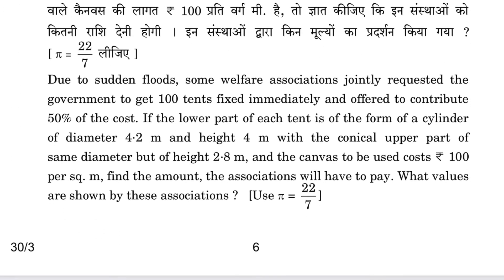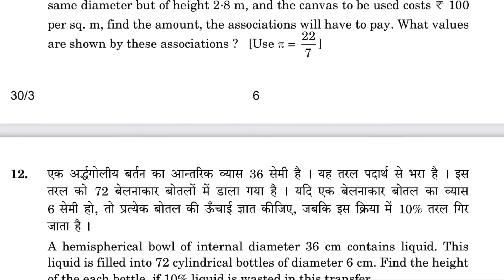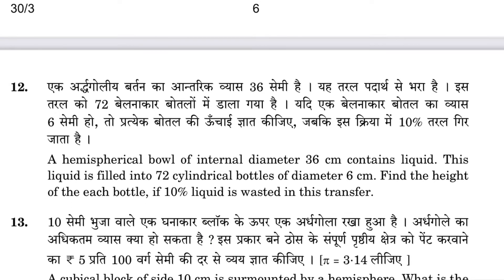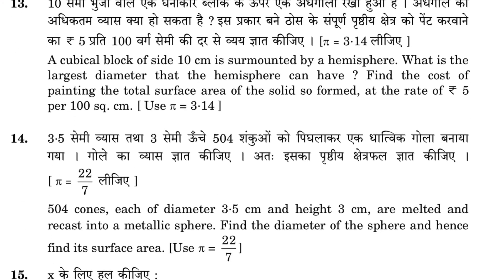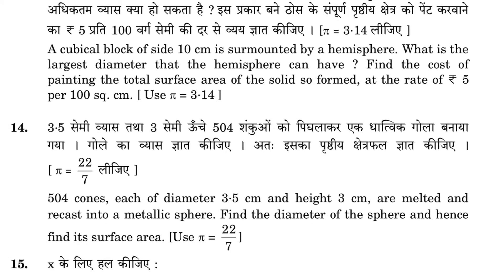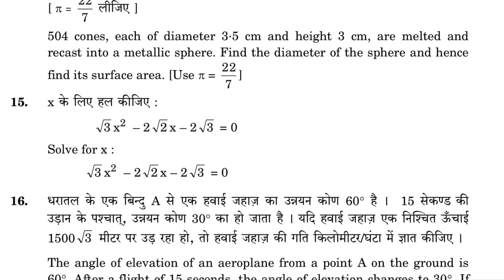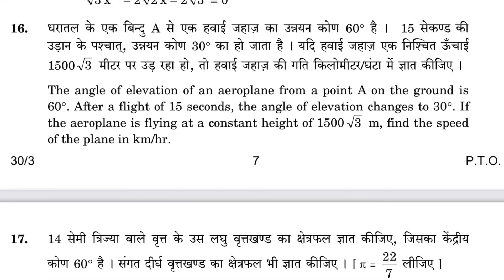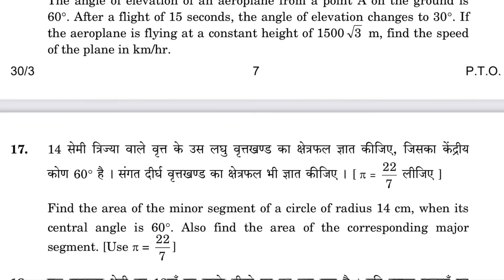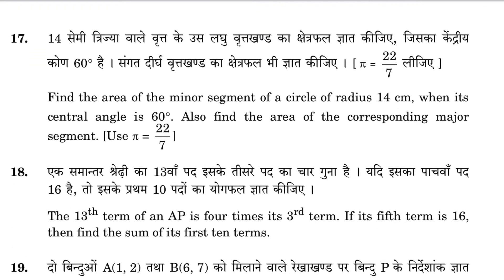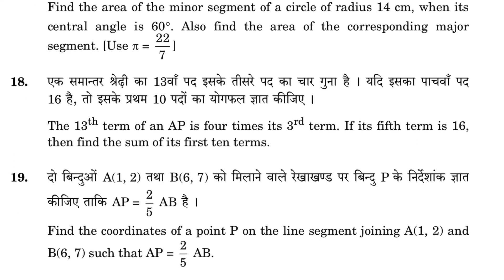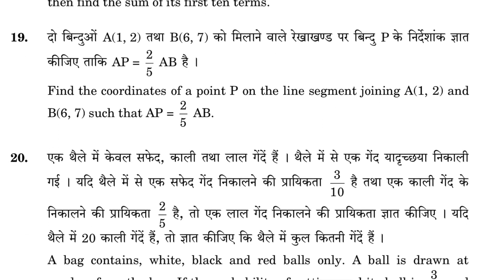Now let's move to Section C. There are 10 questions, three marks each. Question 11 is on surface area and volumes, question 12 again on surface area and volumes, question 13 on surface area and volumes, question 14 on surface area and volumes, question 15 on quadratic equations, question 16 on trigonometry heights and distances, question 17 on areas related to circles, question 18 on EP, question 19 on coordinate geometry, and question 20 on probability.